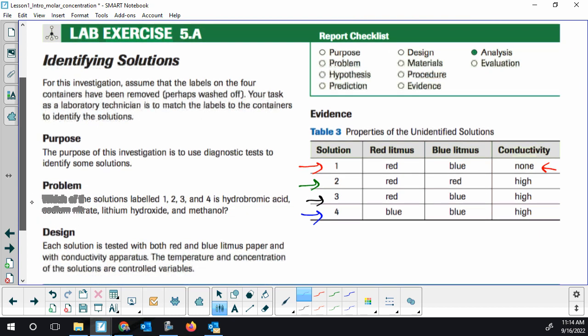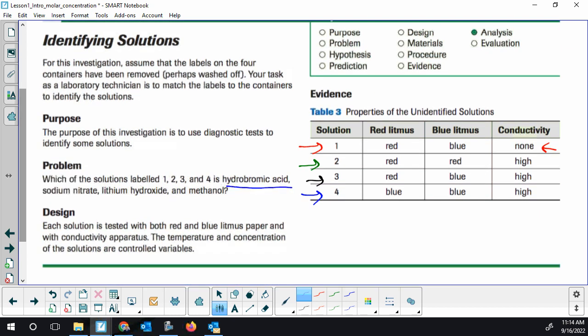Now we're told the four possibilities. The solutions are either hydrobromic acid, so that's an acid. Sodium nitrate, which will remind you sodium nitrate is just a salt. Lithium hydroxide is one of the solutions, and that hydroxide needs to pop out. So hydroxide is one of our acids and bases. And then last, you have methanol, a molecule. Methanol has no metal and non-metal combinations. So it's a molecule, so it's not going to ionize. So which is which?